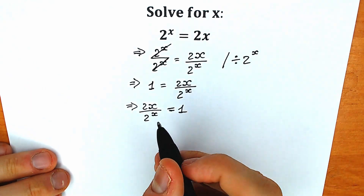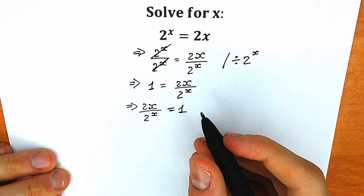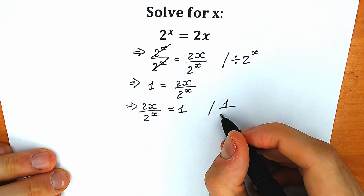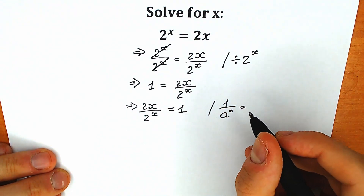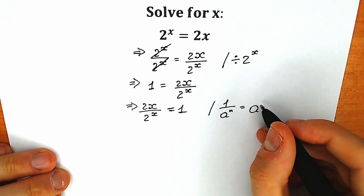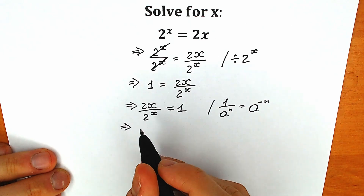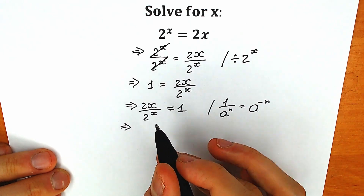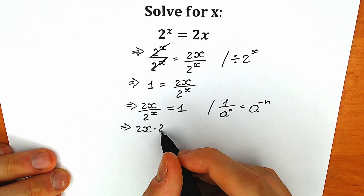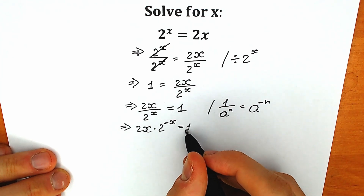Next, I'm going to write this 2 to the x in our numerator. But remember an important property: when we have a to the power n in the denominator and bring it to the numerator, we need to put a minus sign on the exponent. So we will have 2x times 2 to the power minus x, equal to 1.